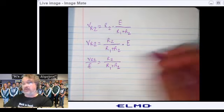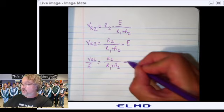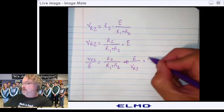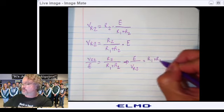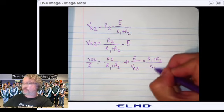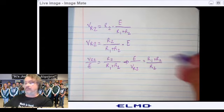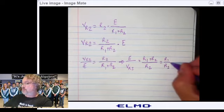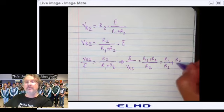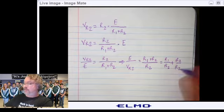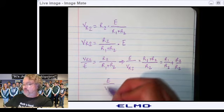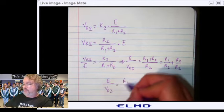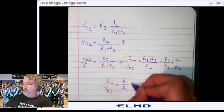And if I take the reciprocal of both sides, it's going to give me E over VR2 equal R1 plus R2 over R2. Now, this can also be written as R1 over R2 plus R2 over R2, which leaves us with E over VR2 is equal to R1 over R2 plus 1.